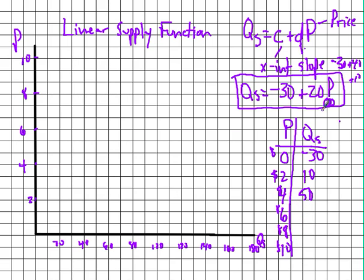At $6: 6 times 20 is 120, minus 30 is 90. At $8: 8 times 20 is 160, minus 30 is 130. At $10: 20 times 10 is 200, minus 30 gives us 170.